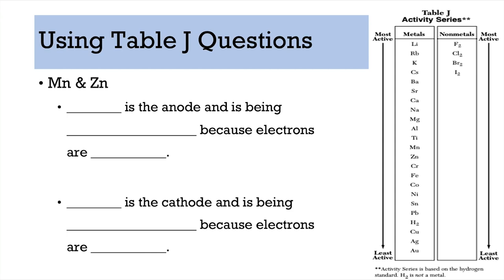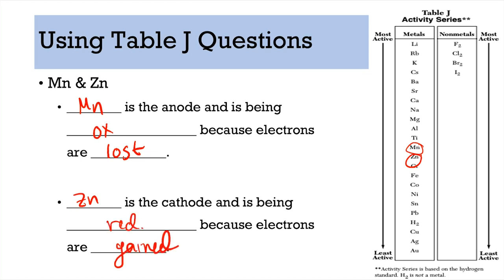Next pair: Mn (manganese) and Zn (zinc). It doesn't matter how far apart they are on the table — whichever is higher is the anode. Manganese is higher, so manganese is the anode — it is oxidized and electrons are lost. That means zinc is the cathode — it is being reduced and electrons are gained.